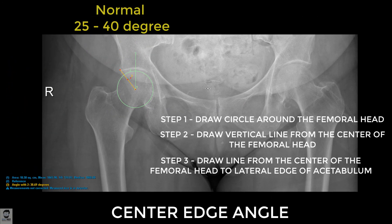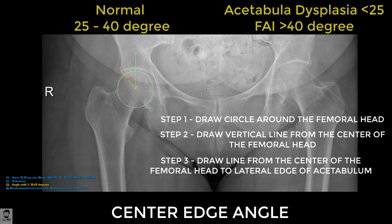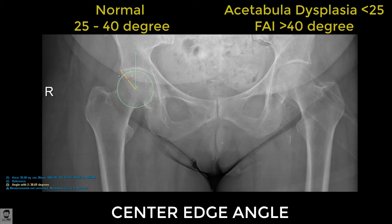The angle measured here is 38.69 degrees. The normal angle is 25 to 40 degrees. There are two main conditions to remember: one is femoroacetabular impingement with a pincer-type lesion, where there is a bony overgrowth and extended acetabular coverage of the femoral head; the second is acetabular dysplasia, where there is less acetabular coverage.